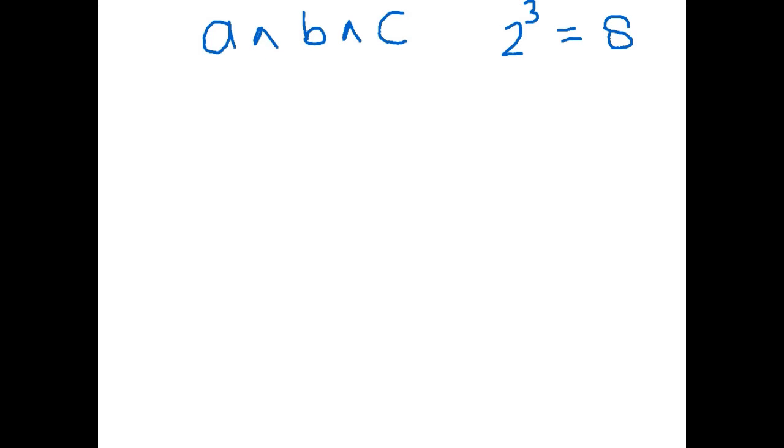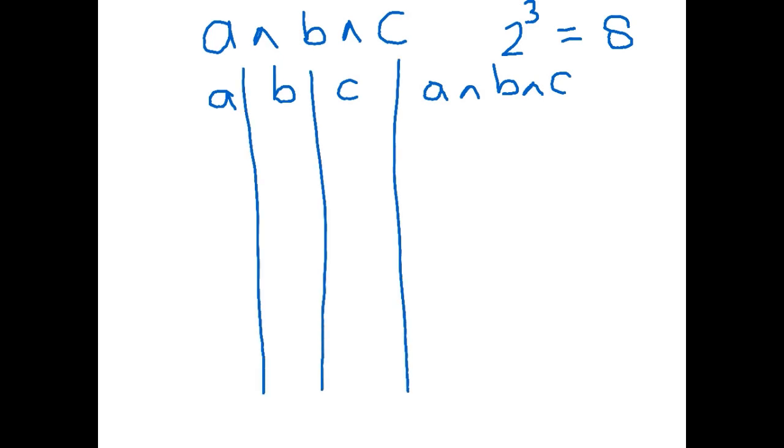So if we work with my other method, let's set up our columns. We've got a, we've got b and we've got c. And when we and them all together, we can do it in one hit. So I'm going to put that one as another column heading. So I've set up my columns.